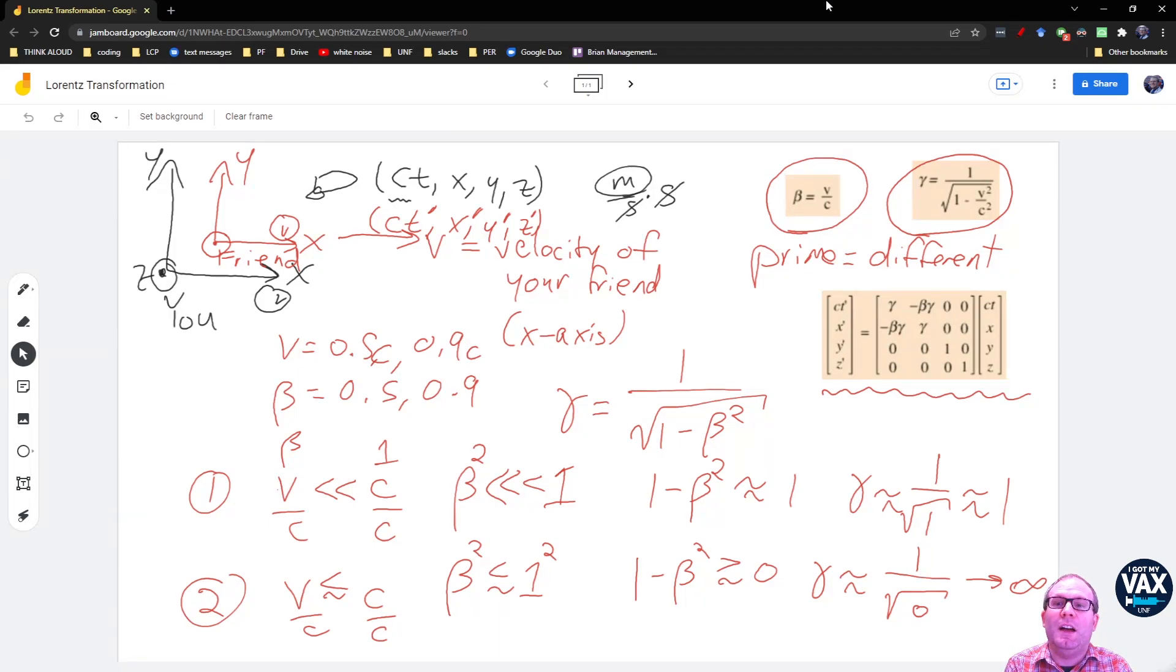And so when it comes time to do this transformation, to understand the relationship between your reference frame and your friend's reference frame, you just carry out this type of multiplication like we've seen before. You take this row, multiply it by the column vector that you have here, meaning you multiply each piece together and then add them up, and that's going to give you your new CT prime. So your CT prime is going to be gamma times CT minus beta gamma times X, and then zeros for the Y and the Z. And then you're going to do the same thing here. You're going to take the second row, multiply it by the column here, that's going to give you X prime, the second element in the new vector. So you're going to have an X prime equal to negative beta gamma CT, a lot of letters going on there, plus gamma times X, and then zeros for the Y and the Z terms.